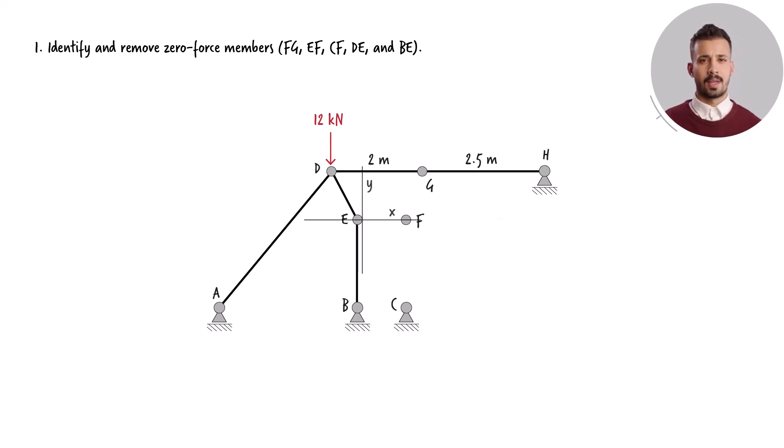Next, we position the Cartesian coordinate system at joint E. Given that the force in member DE is the sole force exhibiting a component in the x direction, it follows that DE is a zero-force member. Consequently, this implies that BE must be a zero-force member as well. According to this simplified diagram, since there are no forces acting at joint B, the reaction forces at the pin support are zero.